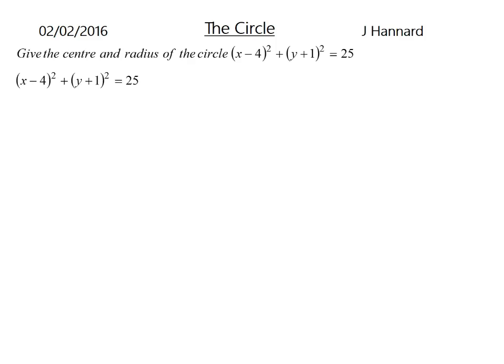Remember, the equation of a circle is X minus A squared plus Y minus B squared equals R squared. So if we think of the numbers, the centre is obviously going to be, well, the A is going to be a 4, and your B is going to be a minus 1, and your R will be 5. So it's a circle with the centre of 4, minus 1, and with a radius of 5.